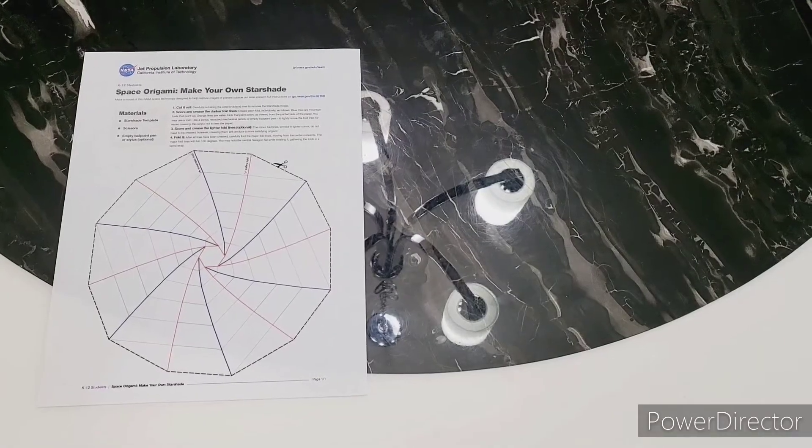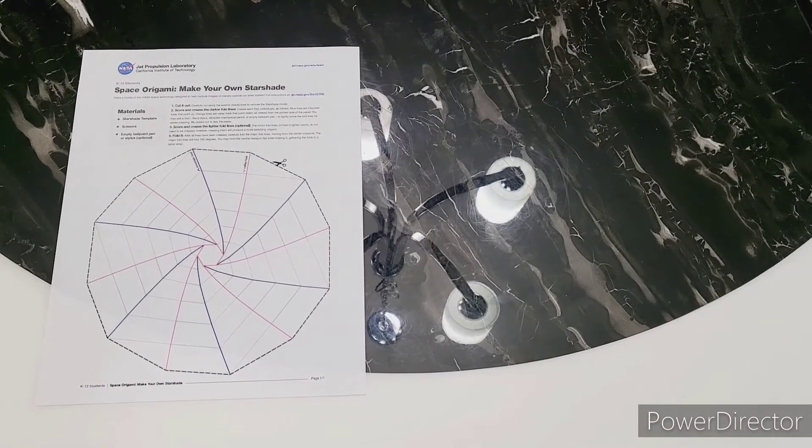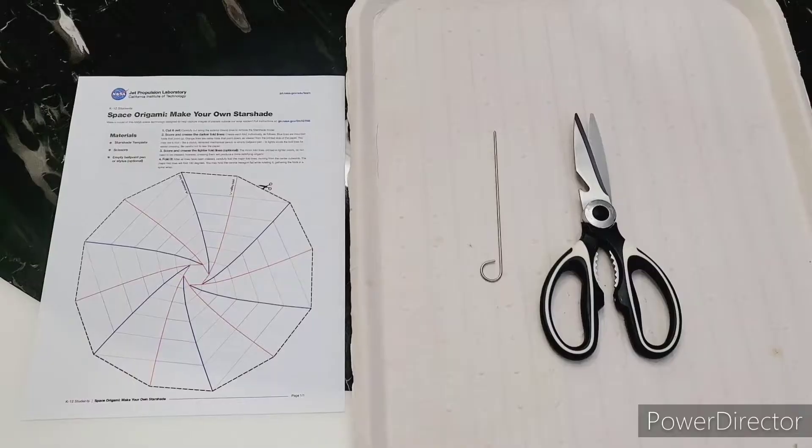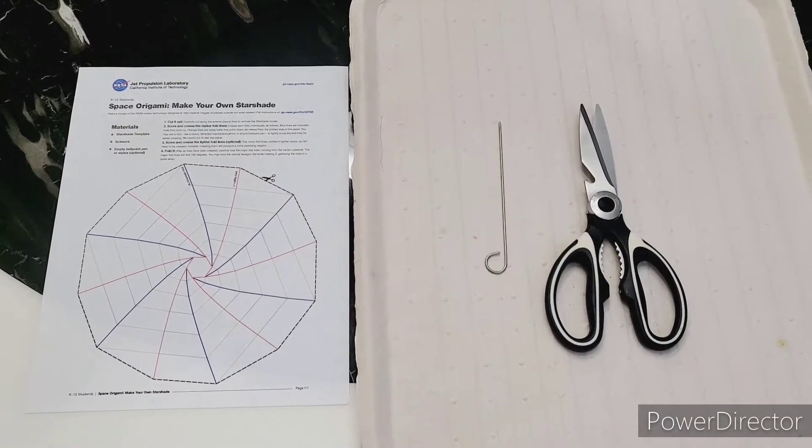You will need a starshade template by NASA. The link will be in the description down below. You will also need scissors and a pointy object to help you score the paper.